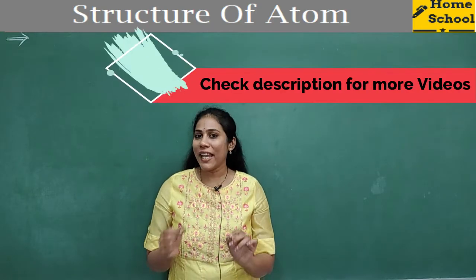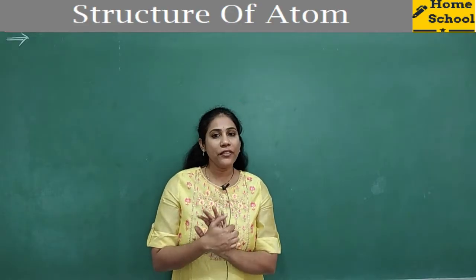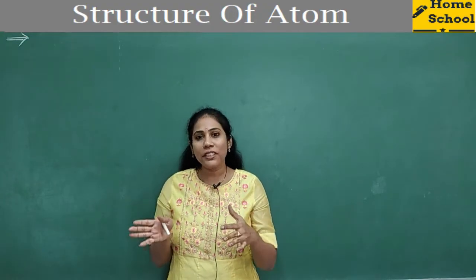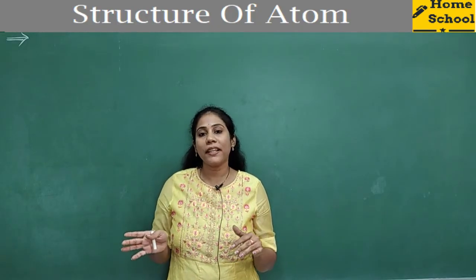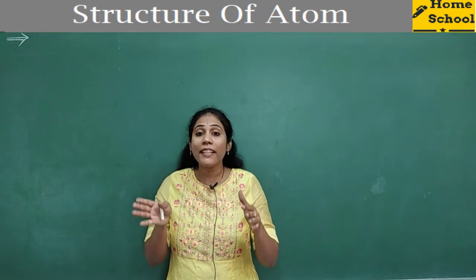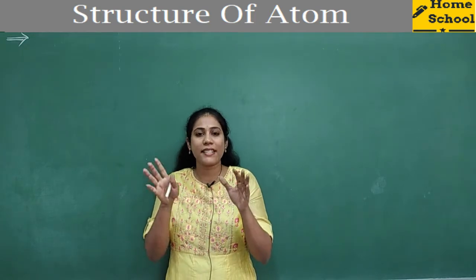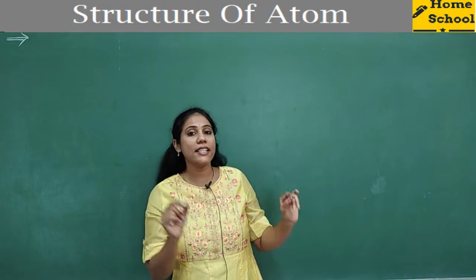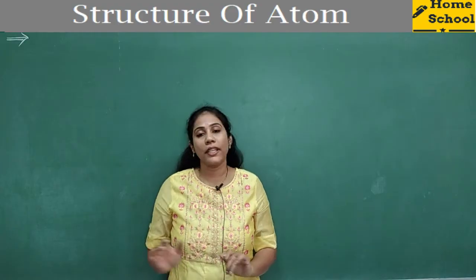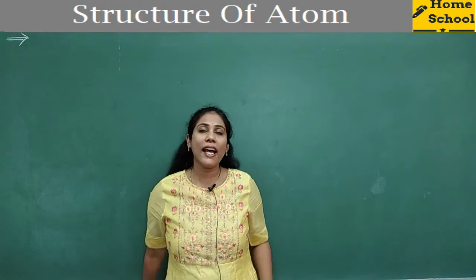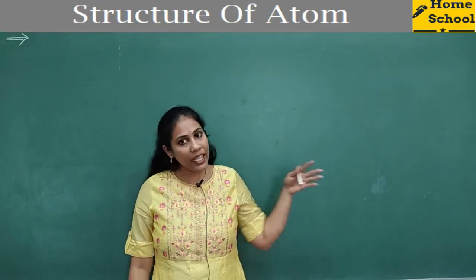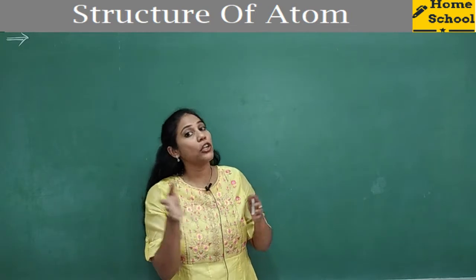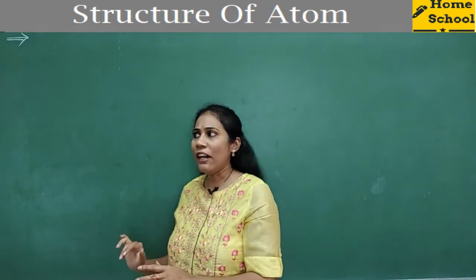Welcome to Home School. We are in a wonderful chapter called Structure of Atom. I already finished one video on Structure of Atom in which I discussed everything about electromagnetic radiations — how they are produced, the different types, and the electromagnetic spectrum, which is all the different types of radiations arranged in increasing or decreasing order of their wavelength. In our last class, we understood that electromagnetic radiations travel in the form of waves — that was the wave theory of light.